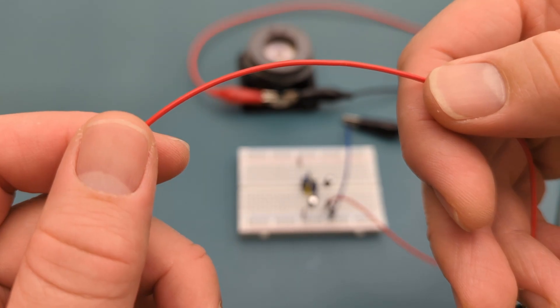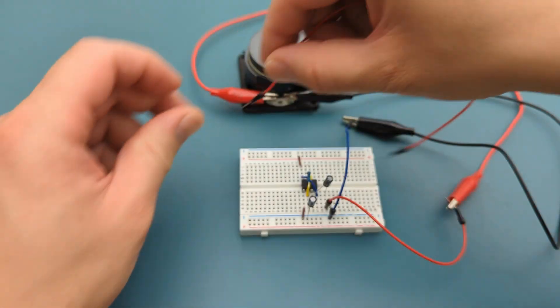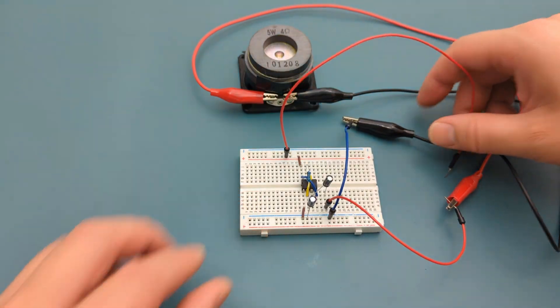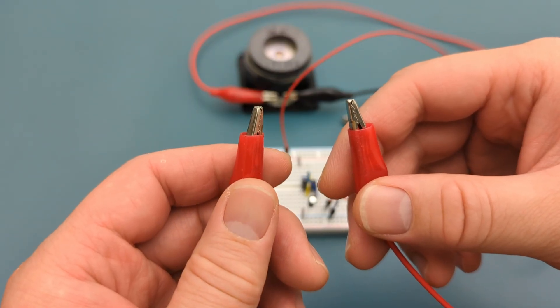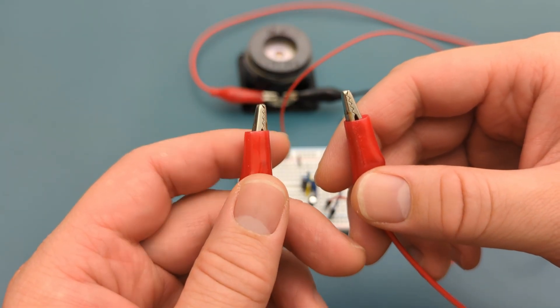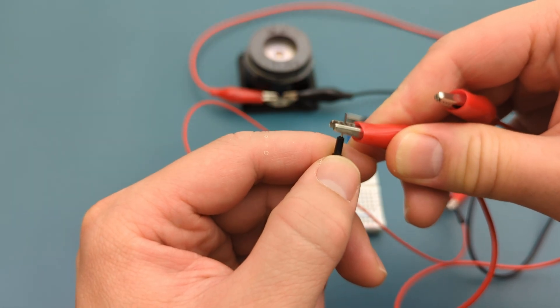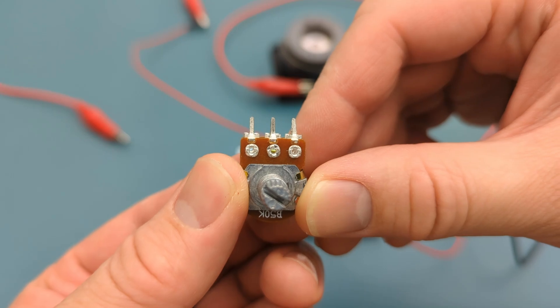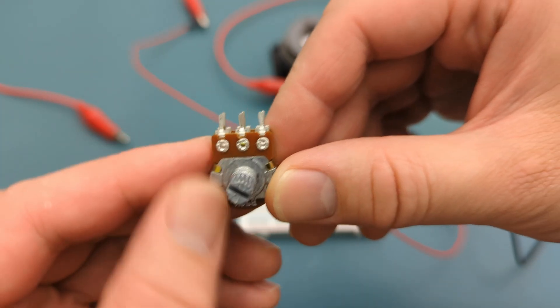Insert a jumper wire into the positive rail. Attach the other end of the jumper wire to the right terminal of the potentiometer.